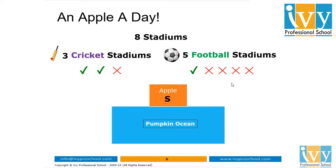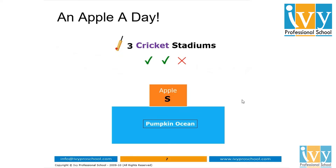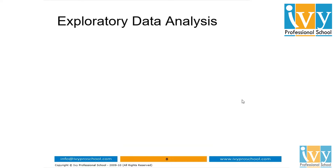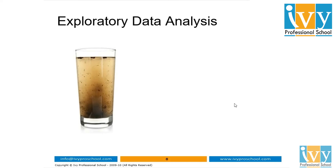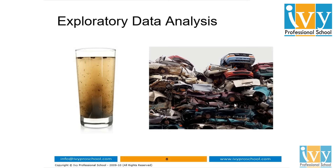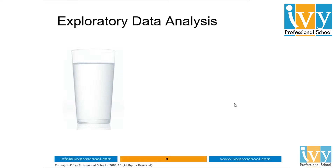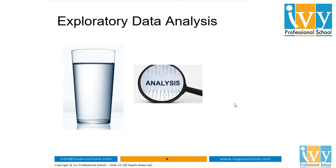For cricket stadiums, the majority are functional, and for football stadiums, the majority are dysfunctional. So I can only consider the cricket stadiums for our analysis. I rejected the football stadiums because the majority of the columns are abandoned — they are not serving any purpose, not giving any data. Exploratory data analysis is taking unclean or unstructured data, cleaning it thoroughly to make it free from impurities, analyzing it carefully, and making it ready for machine learning model building.